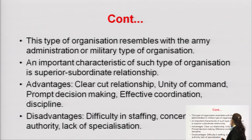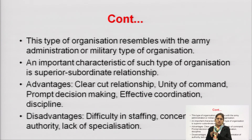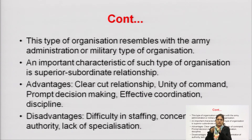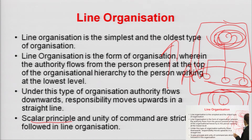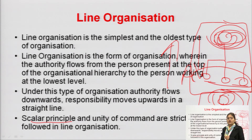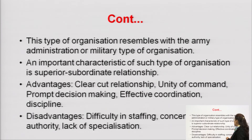A characteristic of line organization is the superior-subordinate relationship — there is one superior and one subordinate, and authority is not divided into departments. The advantage is a clear-cut relationship: there is no confusion about whom to report to. In the hierarchy, the supervisor and subordinate relationship is clearly defined at every level, so there is a clear-cut relationship throughout the organization.